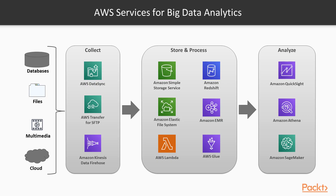The following chart shows the key services for Big Data Analytics in AWS. There are three categories: Collect, Store and Process, and Analyze, aligning with all the typical data flows in organizations.